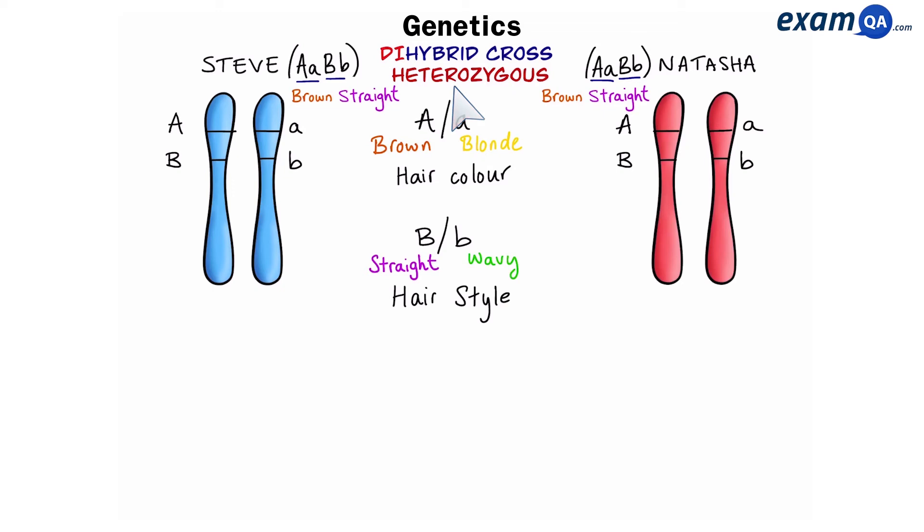So, let's work out what their children's going to be. To do that, we're going to have to see how many different chromosomes they can produce. So, Steve can produce a big A and a big B, and a small A with a small b.